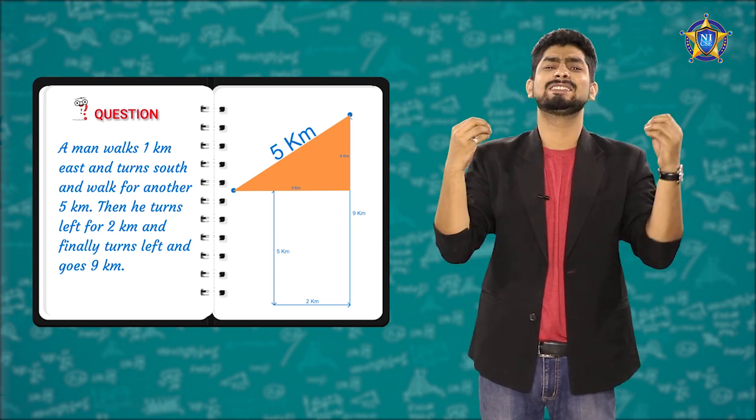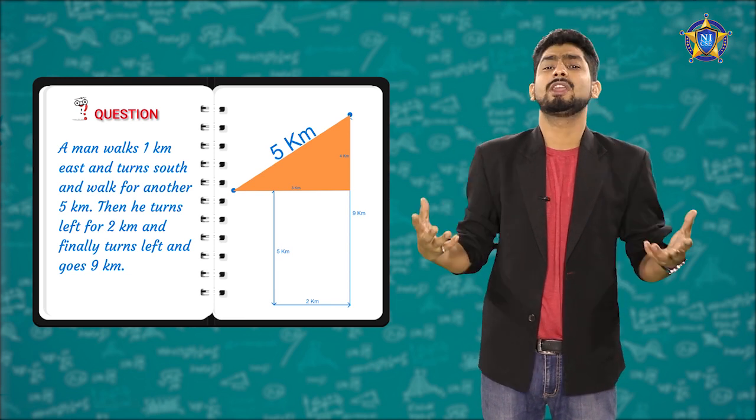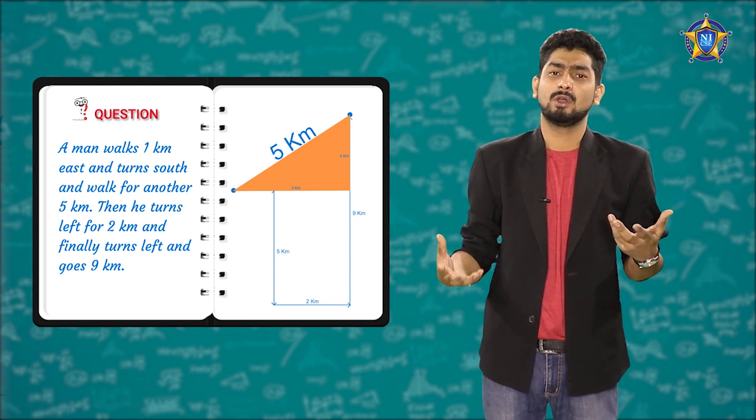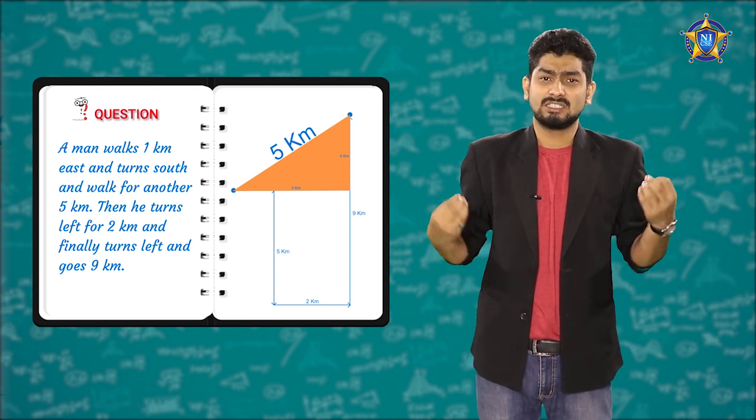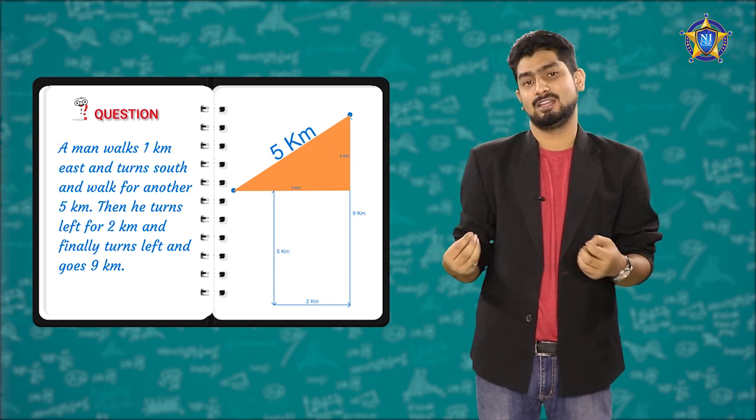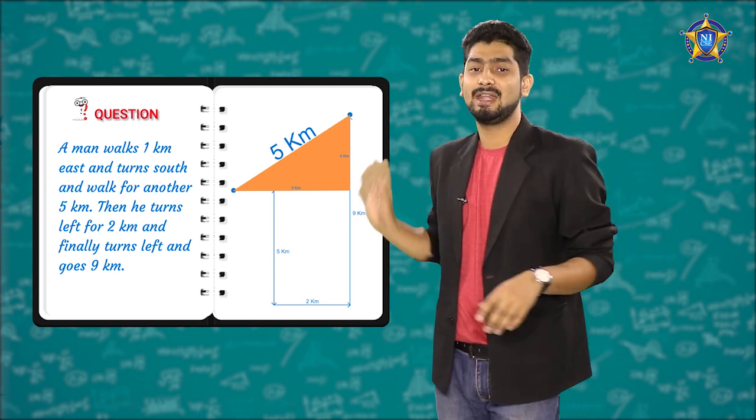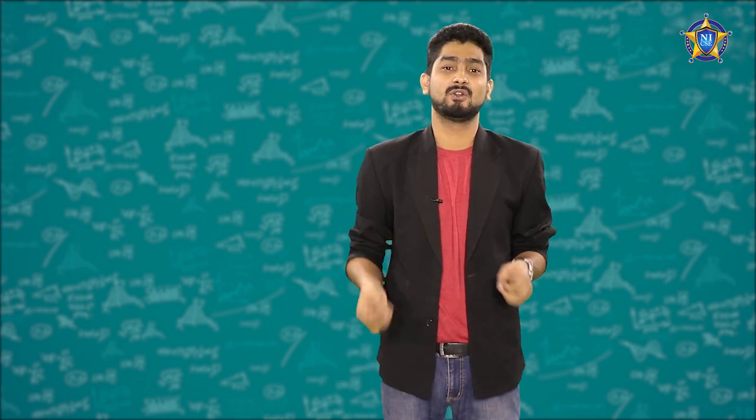That is how you can solve direction tests. It is a very simple trick. Rotate your copy and left and right will not give you problems. Northeast, west and south, these directions are directly to be drawn. That is how you can solve direction tests. I will see you in the next video. We will continue with a few more tricks. Thank you.